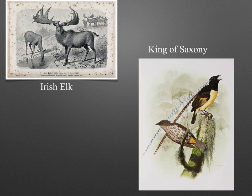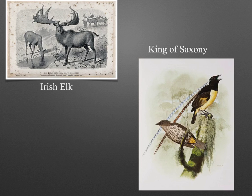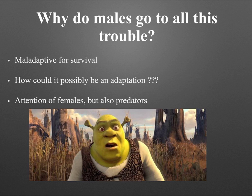This is a maladaptation. The King of Saxony bird has similar features — the adult King of Saxony bird is around 22 centimeters long, but the male has a remarkably long black bill which is up to 50 centimeters long. Just like the Irish elk, this long black bill is also a maladaptation that restricts the bird's movements. The big question is: why do males go to all this trouble? It gets the attention of females, but also of predators — clearly this is a maladaptation.